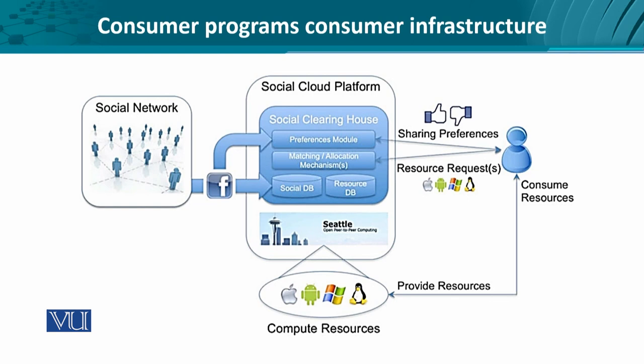Let's have a look at this in more detail. We have a social network such as Facebook, WhatsApp, and the like. The social cloud platform, specifically based on the paper I'm referring to, has a clearing house with sub-components like a preference module where resources are requested, matching and allocation mechanisms like service discovery — which we've already come across in service-oriented architecture — and certain databases or repositories such as a social database and a resource database.